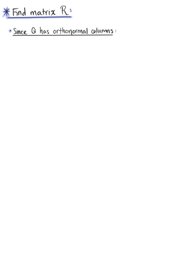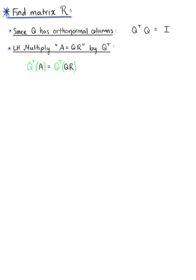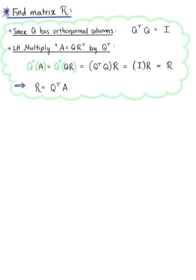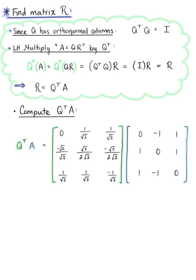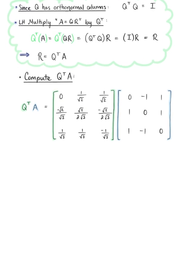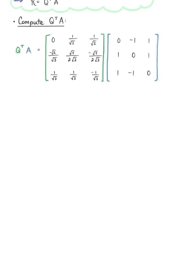How do we find the invertible upper triangular matrix R? Using the fact that matrix Q has orthonormal columns, we know that Qᵀ times Q equals the identity matrix. With this identity in mind, we left-multiply the QR factorization equation by Qᵀ. Simplifying, we get that matrix R equals Qᵀ multiplied by matrix A. So we need to compute Qᵀ times A using the row-column rule.